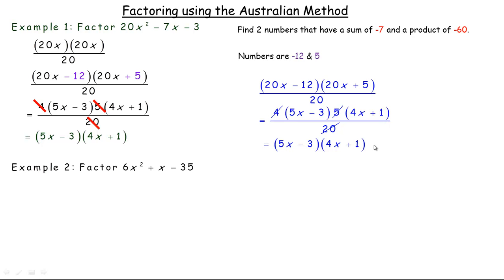Now let's take a look at one more example. Let's say you're asked to factor 6x squared plus x minus 35. So we'd be looking for two numbers that have a sum of 1, because the coefficient of the linear term is 1, and a product of 6 times negative 35 is negative 210.